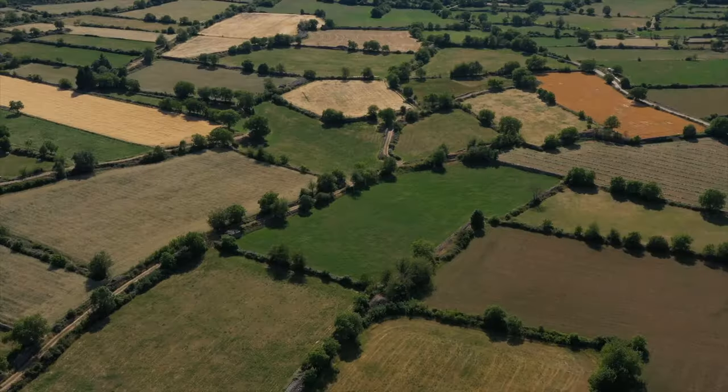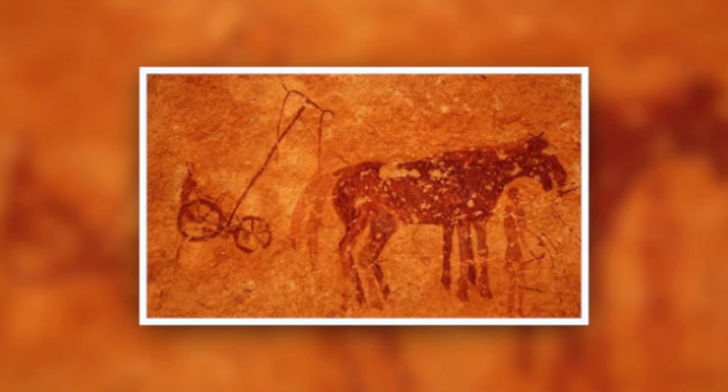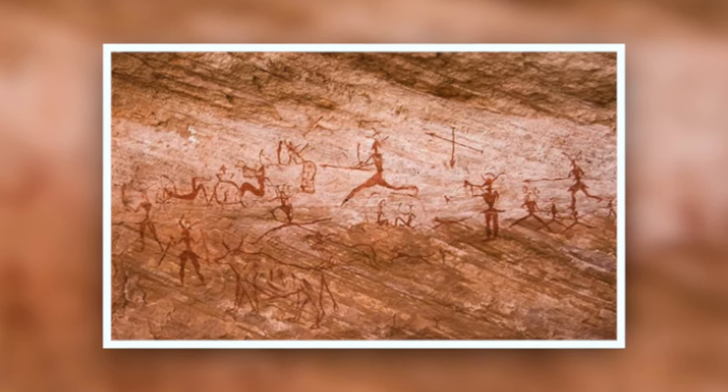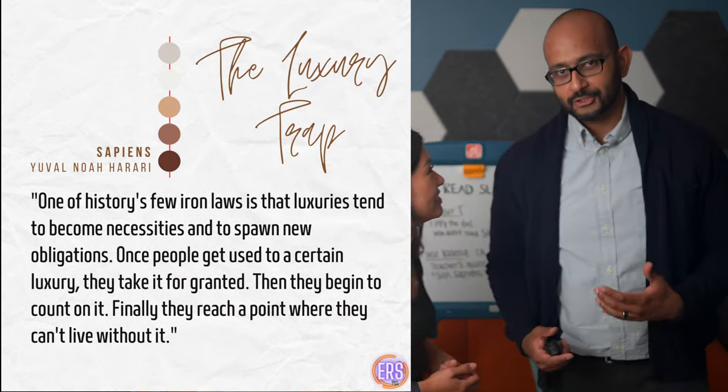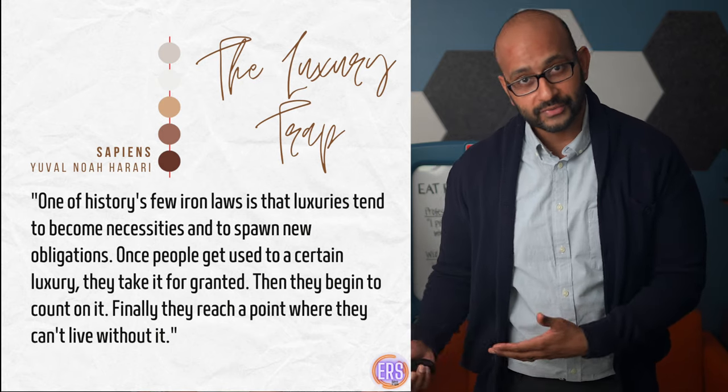Unfortunately, less foraging led to many undesirable outcomes: more labor was required to cultivate crops, there was an increase in human violence to compete for land, and less variety in diet meant a really weakened immune system. Infectious diseases spread among concentrated camps and settlements, and there was an increased rate of childhood mortality in smaller children that relied on grains rather than breast milk. This became the 'luxury trap' — where luxury, like excess grains, becomes a necessity and then brings added obligation, like cultivating and storing grain. The agricultural revolution was a lesson of discrepancy between evolutionary success and individual suffering.